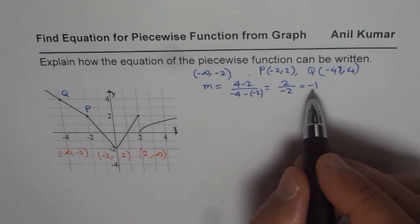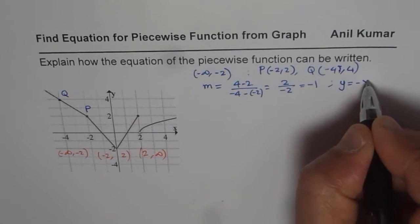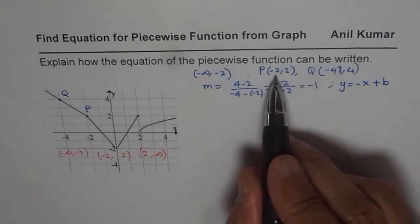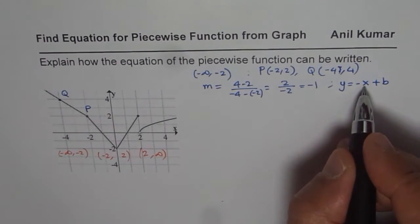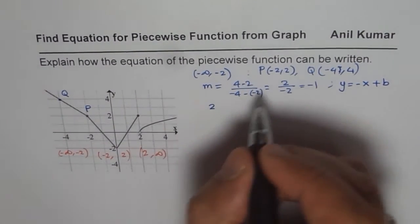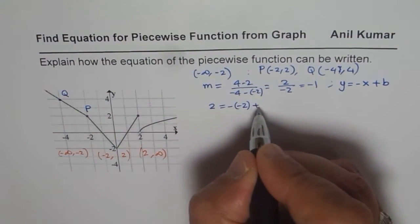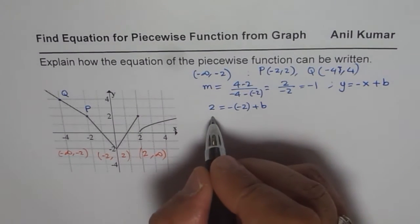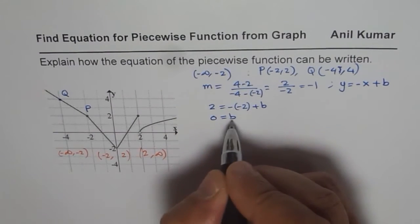Now we can find the y-intercept. So we have equation as y equals to minus x plus b. To find the y-intercept, we can use one of these points. Let us use minus 2 and 2. So if I write minus 2 here, I get 2 for y equals to minus of minus 2 plus b. And if I take it to the right side, I get this is plus 2, so it becomes 0 equals to b. So b is 0.